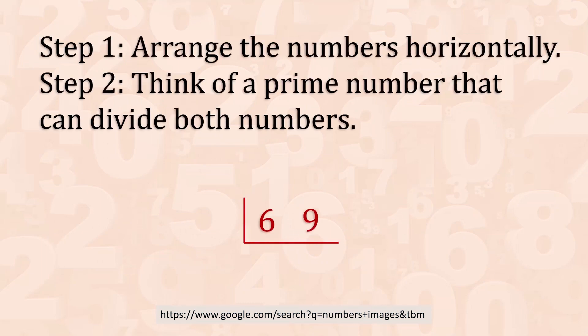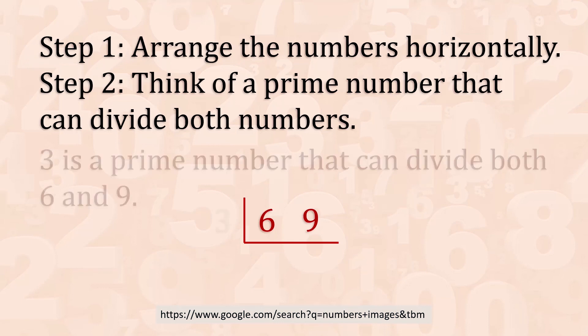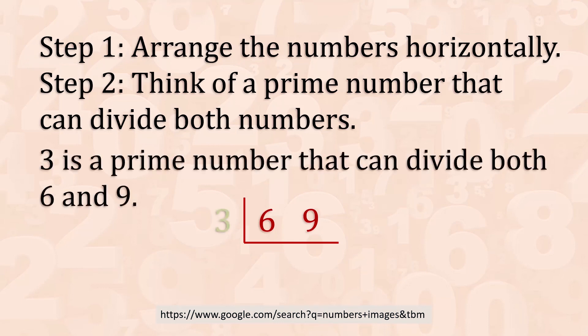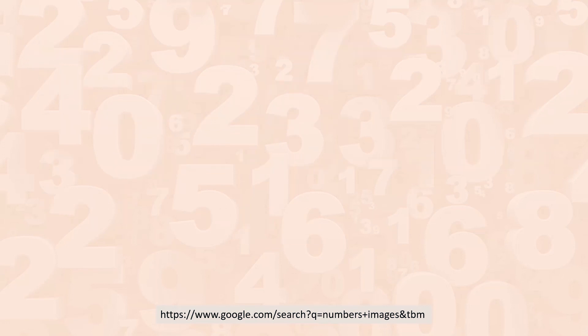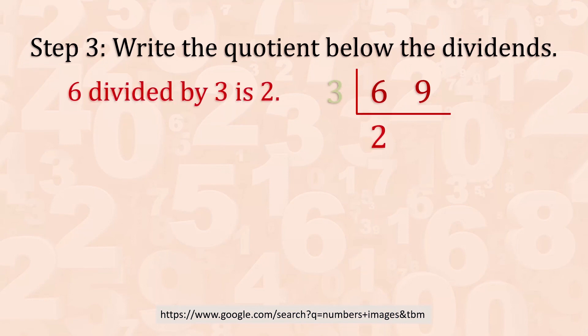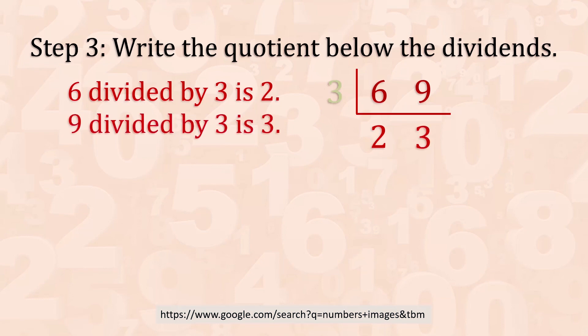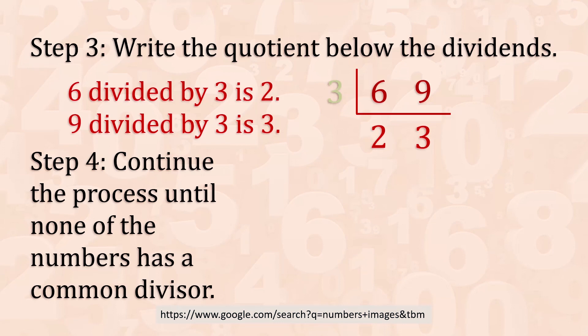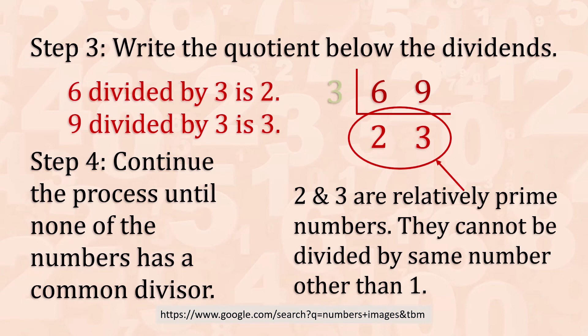Let's solve. Step 1: arrange the numbers horizontally — 6 and 9. Step 2: think of a prime number that can divide both numbers. 3 is a prime number that can divide both 6 and 9. Step 3: write the quotient below the dividends. 6 divided by 3 is 2. 9 divided by 3 is 3. Step 4: continue the process until none of the numbers have a common divisor. 2 and 3 are relatively prime numbers, which means they cannot be divided by the same number other than 1.